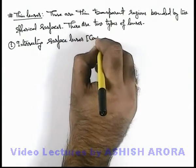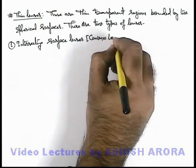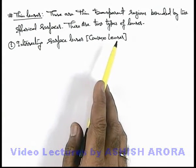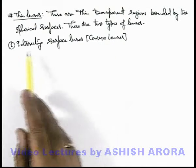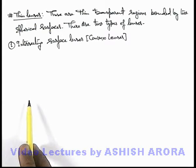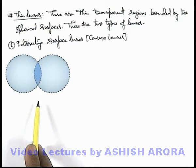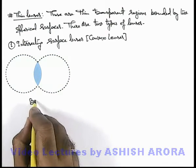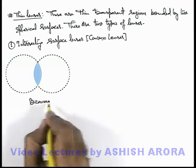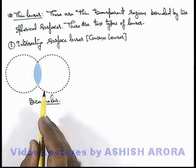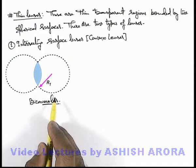Intersecting surface lenses are also called convex lenses. These are the lenses in which the surfaces bounding the region forming a lens are intersecting each other. If we look at a system where 2 spherical surfaces are intersecting each other and bounding a region between the 2, this region between the 2 surfaces we define as a bi-convex lens. The centers of curvature of the 2 surfaces are on the opposite sides of the lens.